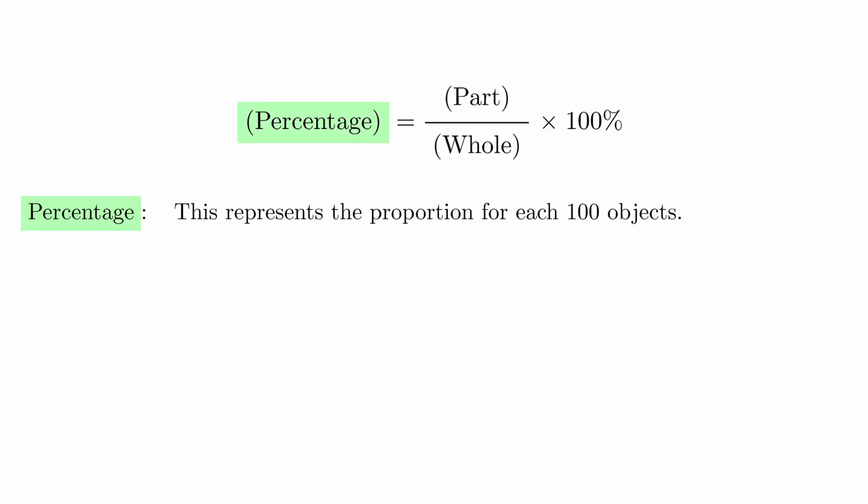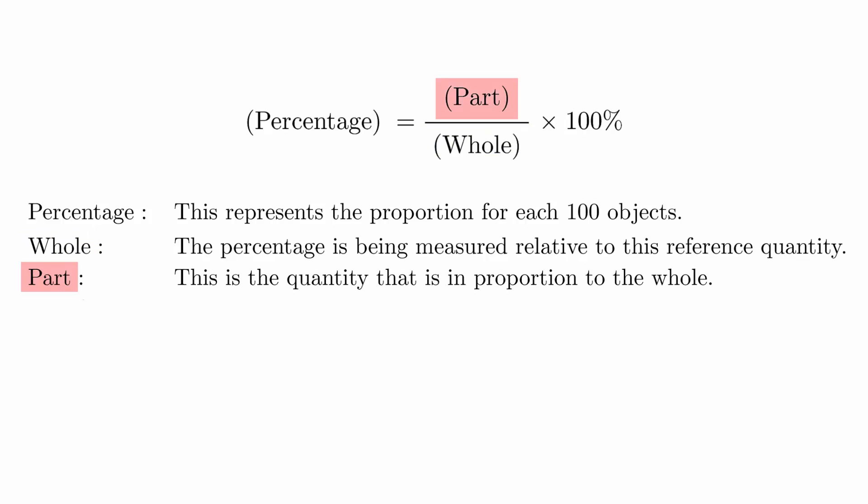The percentage is the number that represents the proportion for each 100 objects. The whole is the reference quantity, and the percentage is being measured relative to this amount. The part represents the quantity that is in proportion to the whole. The multiplication by 100% is a conversion factor for converting a number into a percent.